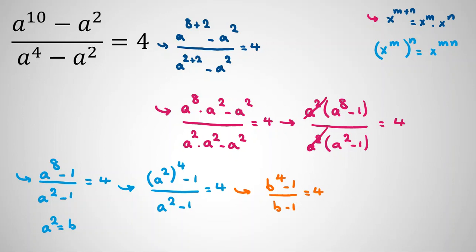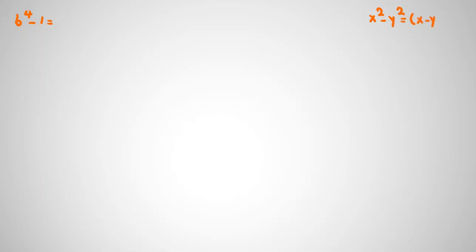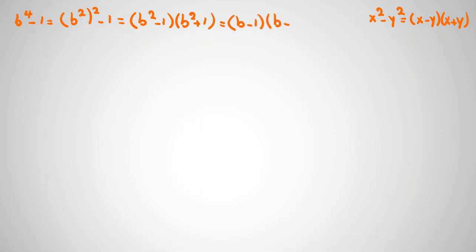Now we use a famous identity to simplify. First, let's factorize b^4 - 1. Using the difference of squares identity x² - y² = (x-y)(x+y), we write b^4 - 1 = (b²)² - 1² = (b² - 1)(b² + 1). Then b² - 1 factors further as (b-1)(b+1), giving b^4 - 1 = (b-1)(b+1)(b²+1). That's the first factorization method.